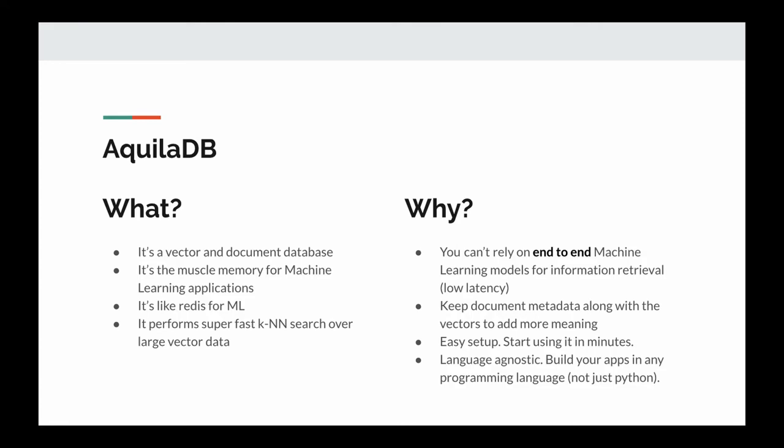AquilaDB is language agnostic. You don't need to use Python, JavaScript, Java, or anything specific — there are no restrictions because it communicates through gRPC protocol. The API is the same for everyone, and anyone can write their own client libraries in their own language. We currently have a Python library already built and ready to go, and we are currently working on a Node.js library.